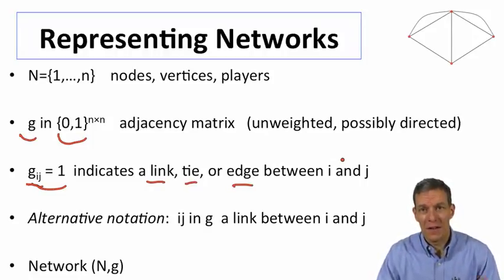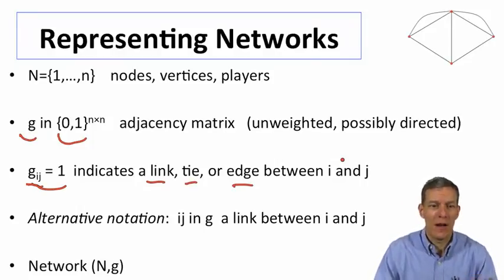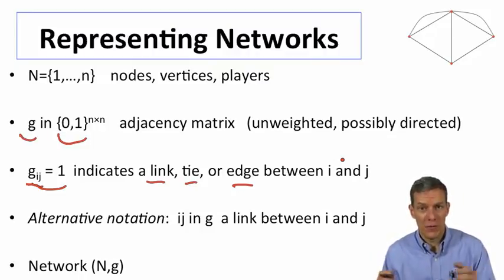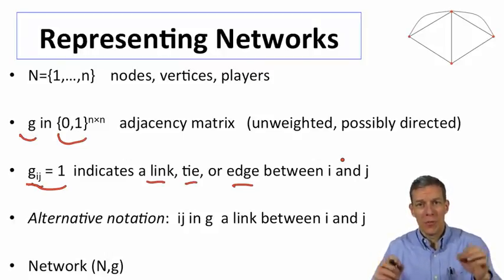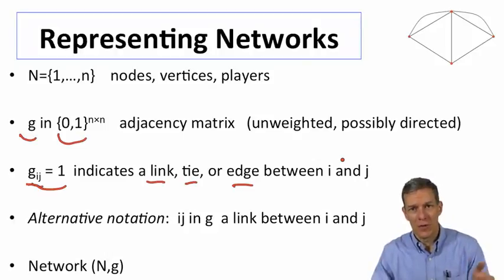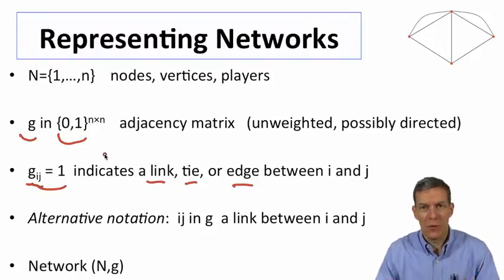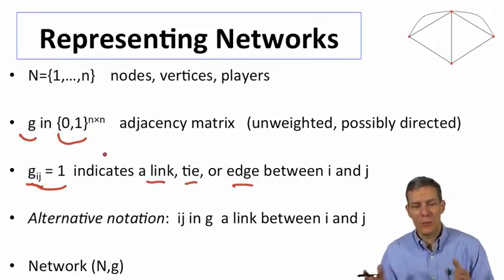Generally, unless otherwise stated in the course, we'll be dealing with ones which are not directed. So if i is connected to j, then j is connected to i. If we're friends with each other, we're both friends, it's a mutual relationship. Or if we're allies with each other, we're both allied to each other. We'll tend to work generically with zeros and ones as the structure of it, so there's either a relationship or not.